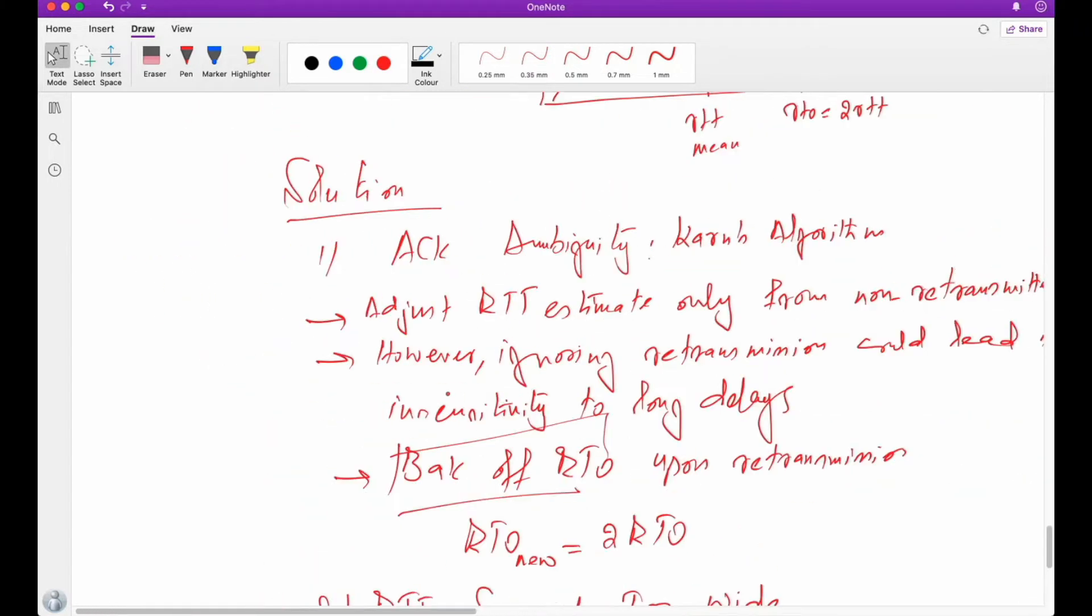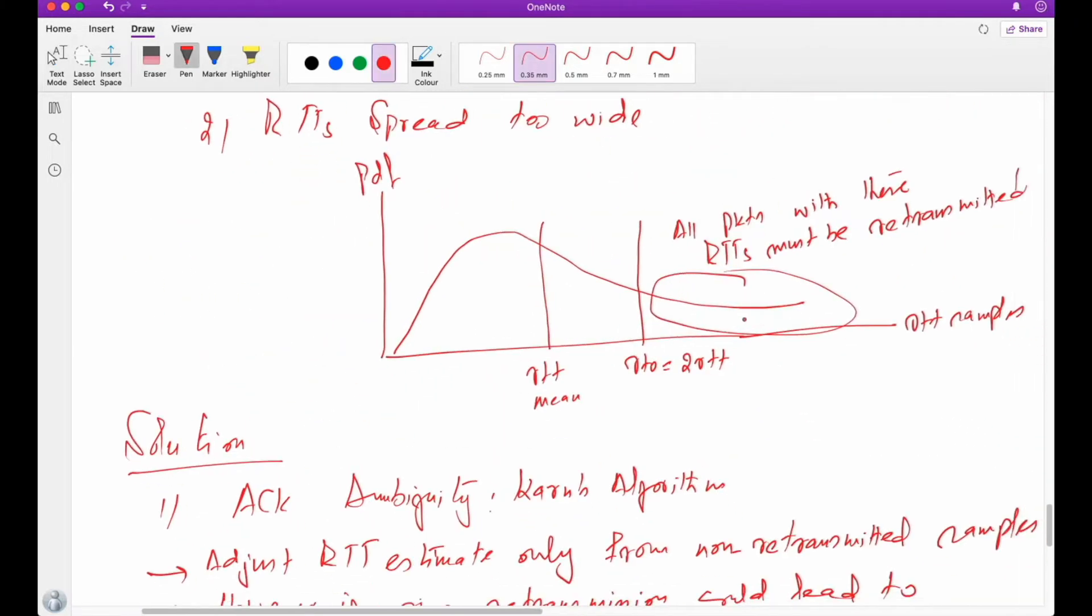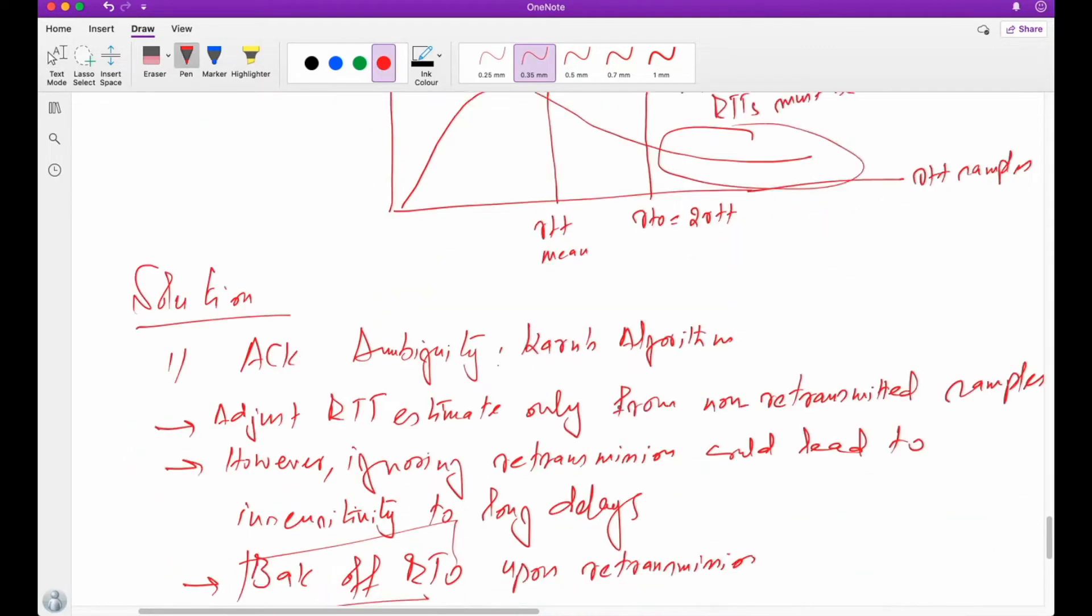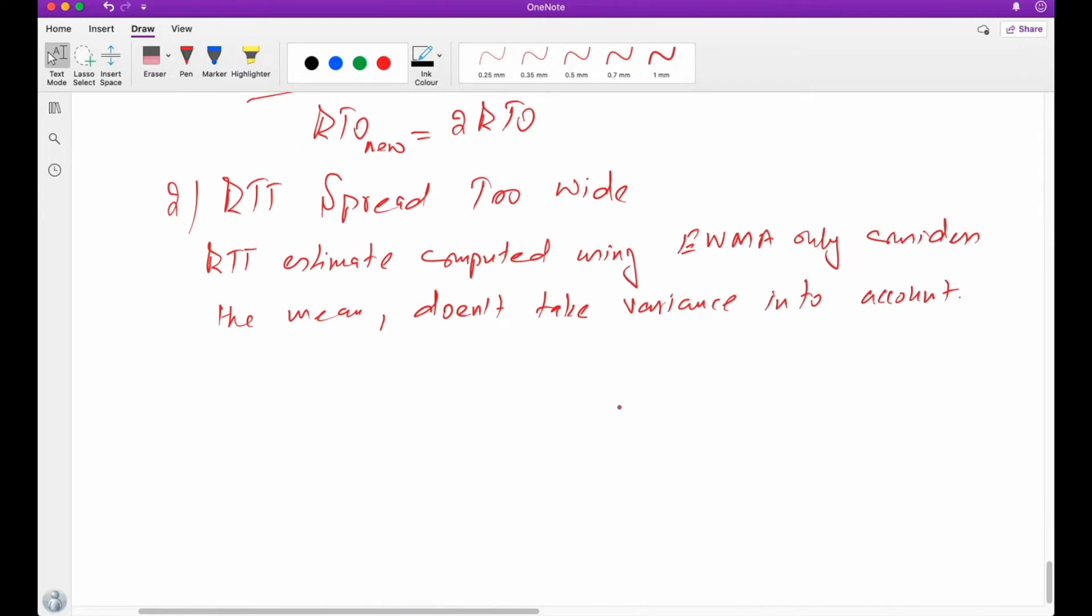So clearly, we have seen this in this example. The RTO is based on two times the estimated roundtrip time. This is the mean, this is the RTO. And this means all the packets having RTT more than this RTO will be retransmitted. Why? Because it's not taking into consideration the variance. And the solution is Jacobson's algorithm.